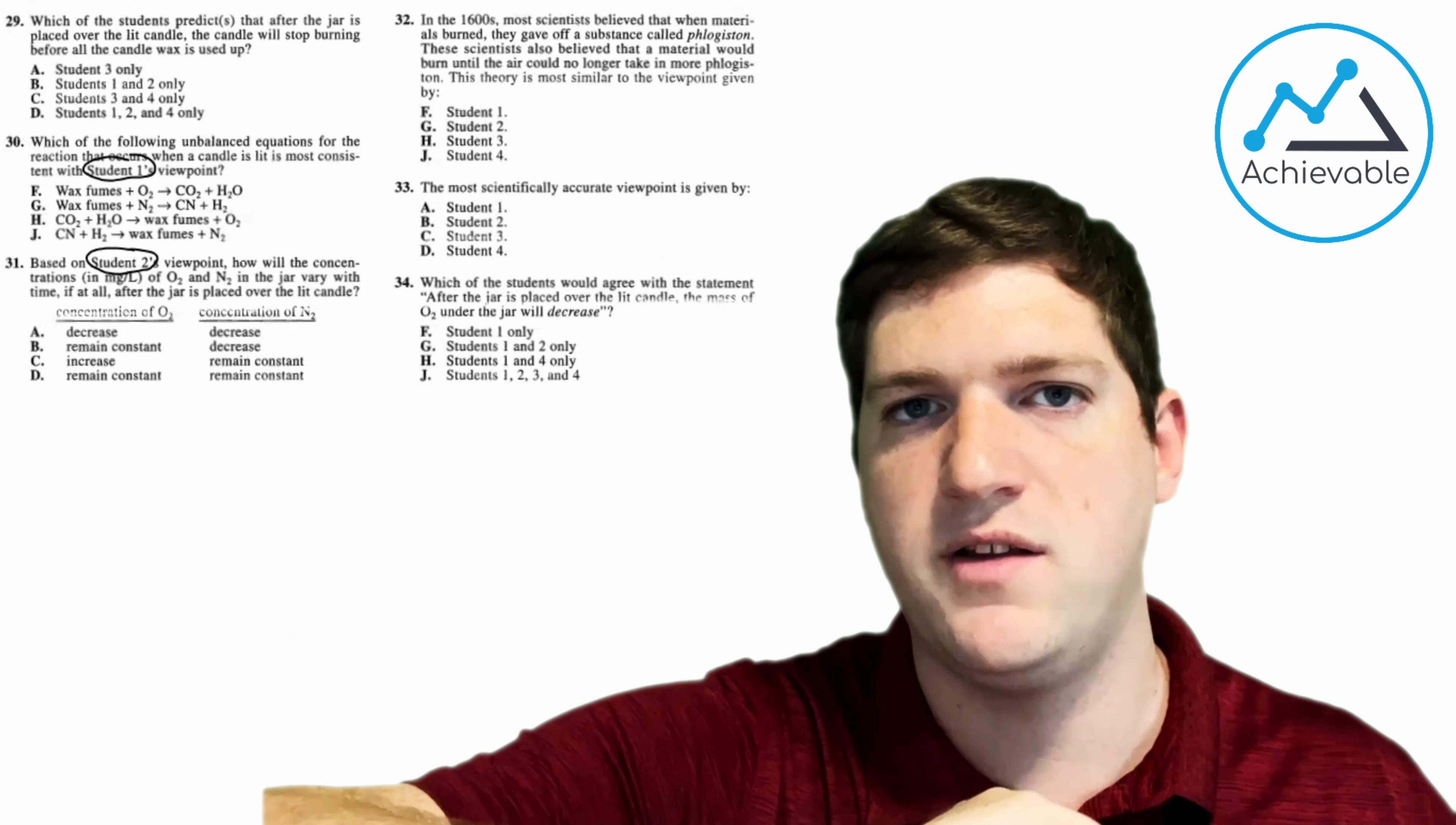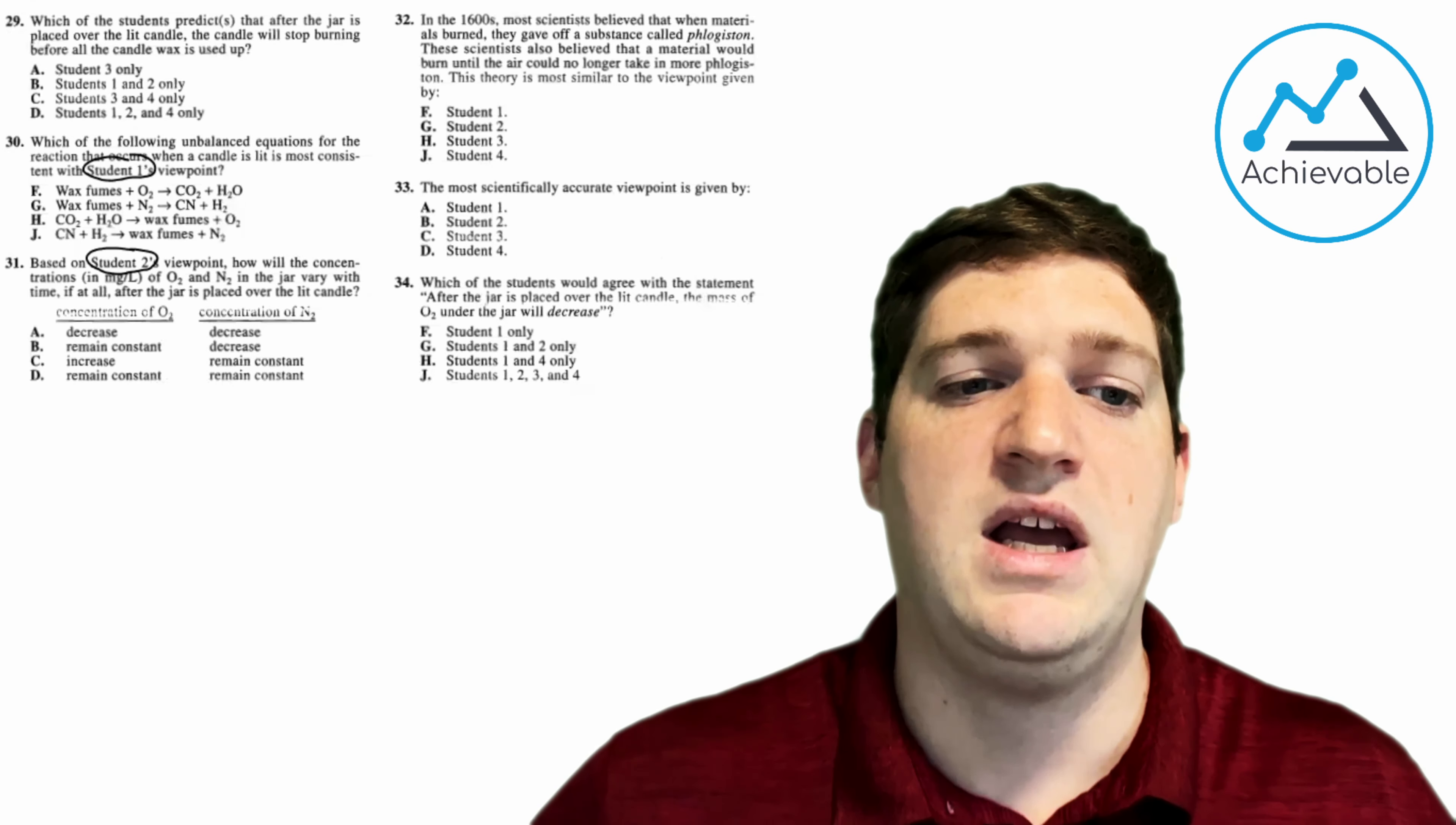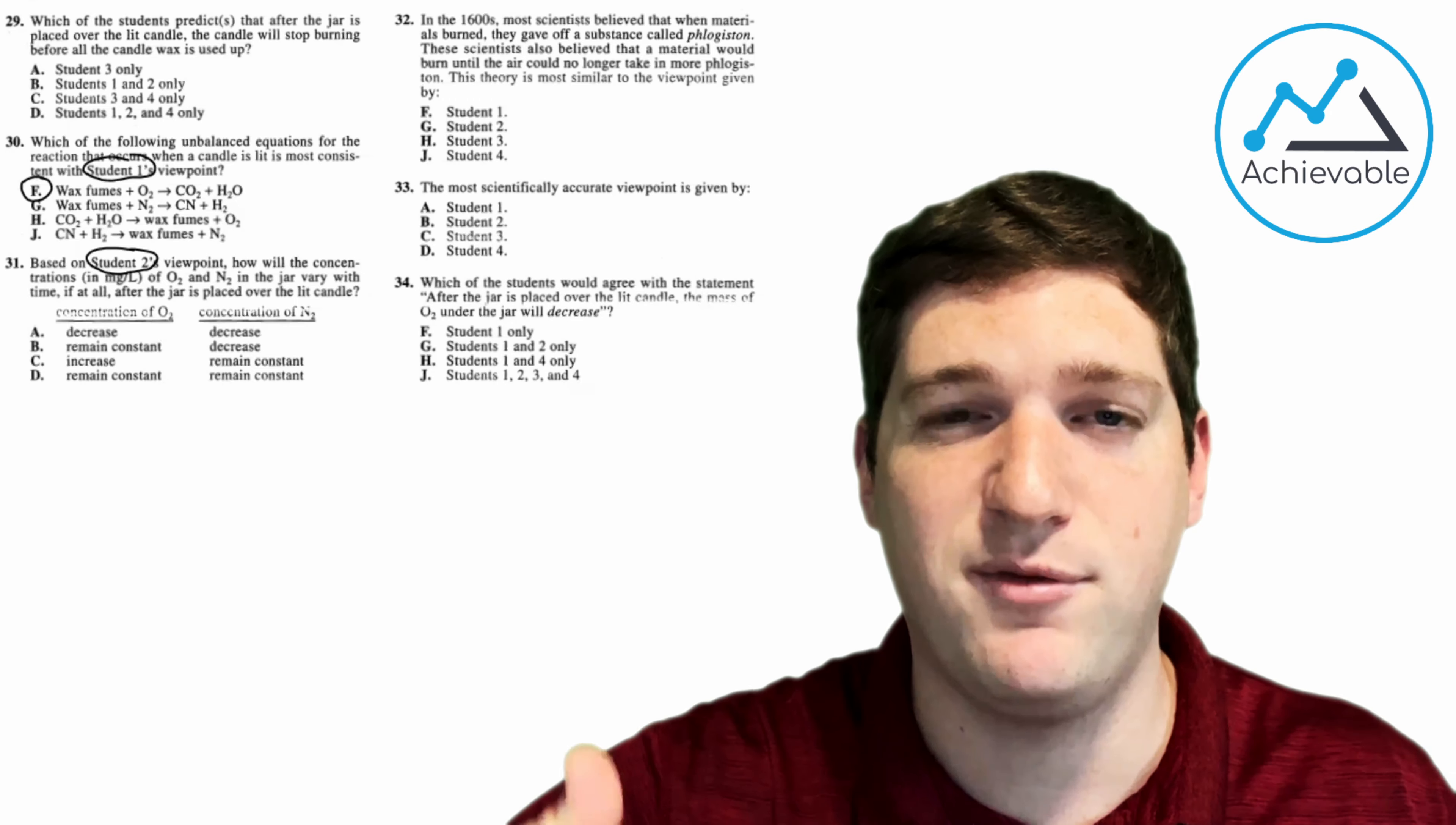Which of the following unbalanced equations for the reaction that occurs when a candle is lit is most consistent with student 1's viewpoint? He said that wax fumes react with oxygen. That's all he really told us, but there's only one answer choice that does that. So we can pick F and move on. We'll quickly do question number 31.